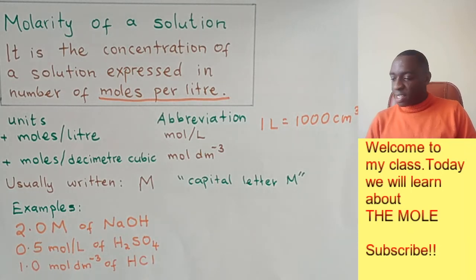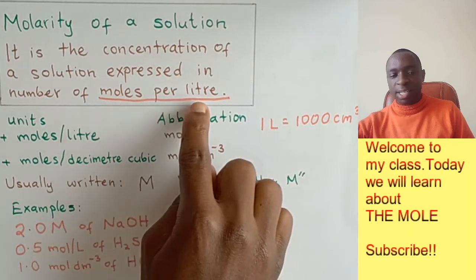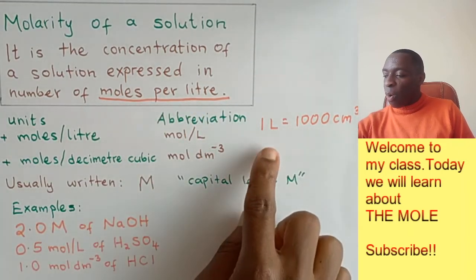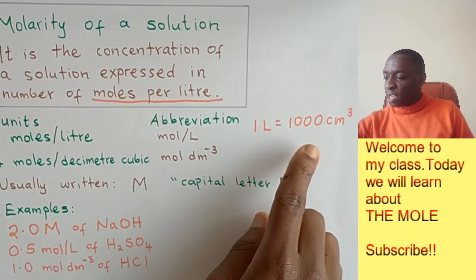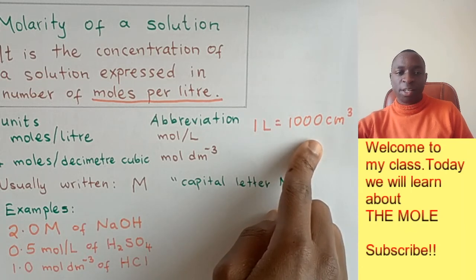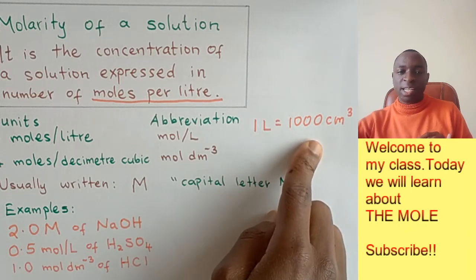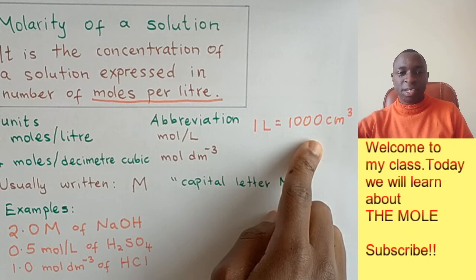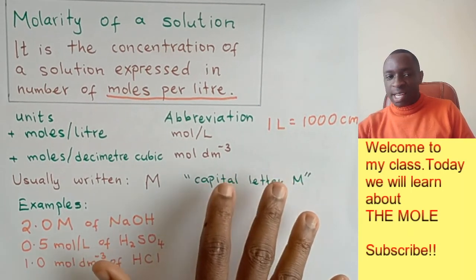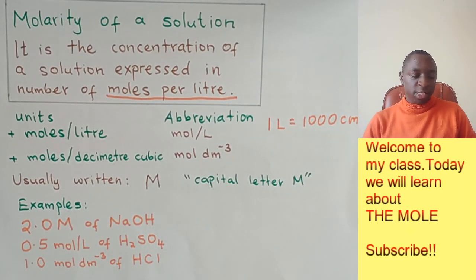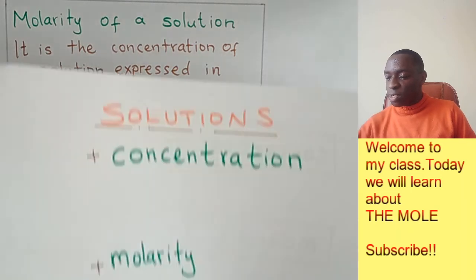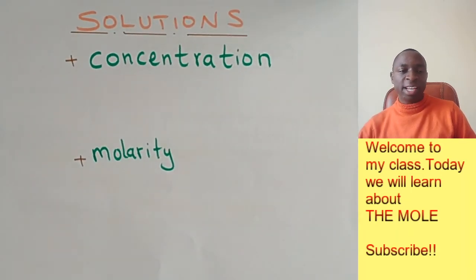And molarity is only expressed in moles per liter. And remember, 1 liter is equal to 1,000 centimeters cubed. And also 1 liter is equal to 1 decimeter cubed. So that is how we express the two different things about solutions. That is concentration and molarity.